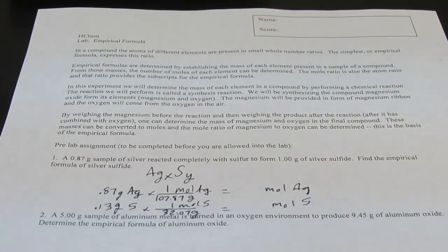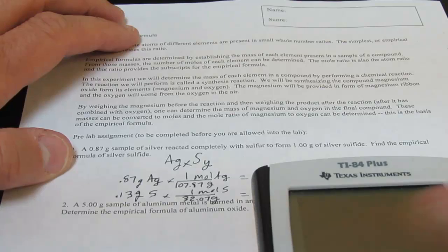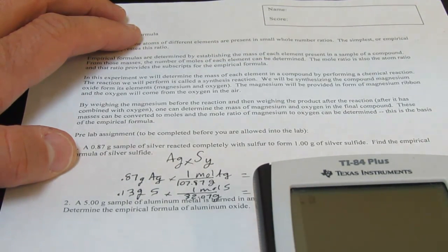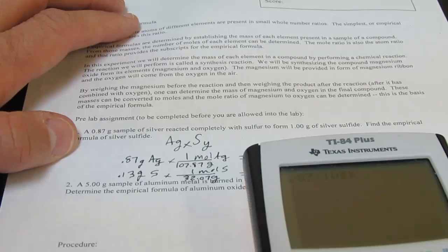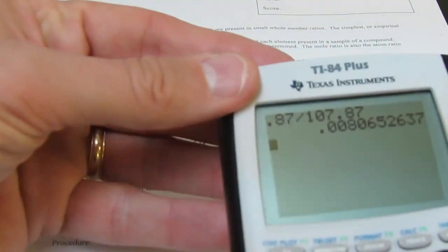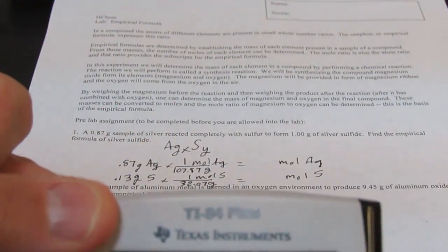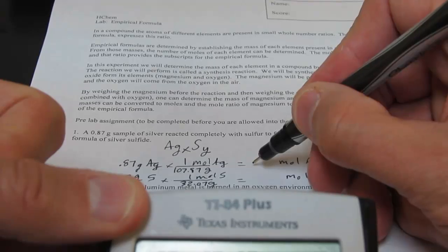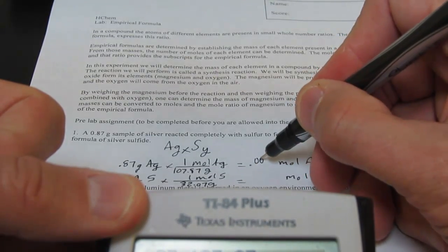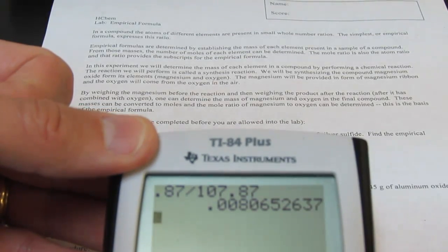Let's pull out our calculators here and we'll plug and chug a little bit. 0.87 divided by 107.87 shows that I used 0.00807. Looks like we're only allowed two sig figs, so we're going to call that 0.0081 moles of silver in this compound.